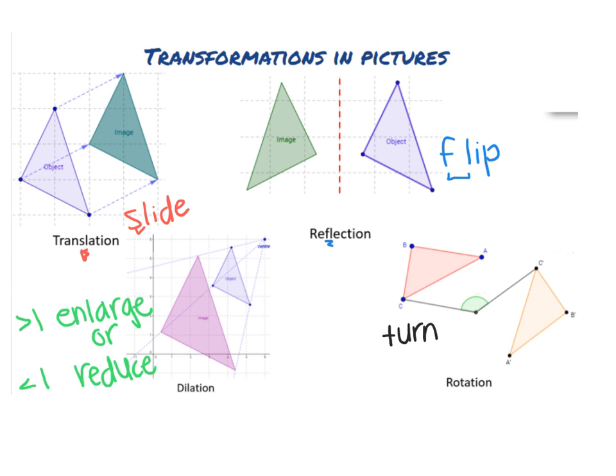One thing we do want to point out with all transformations is that any time you create a new image, or any time you create the image from the original object, you're going to find there is this line or a dot, kind of looks like an apostrophe on the letter. This is called the prime. The prime simply means it is the image, which is not the original.